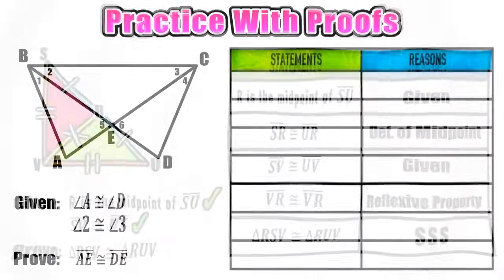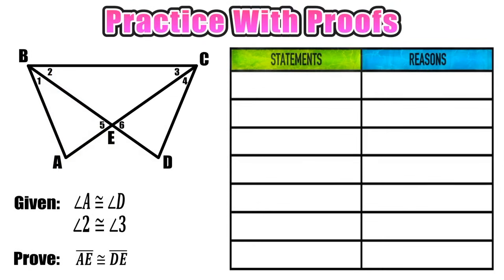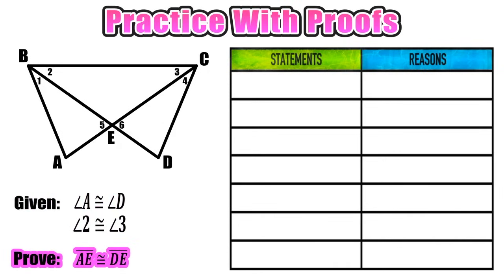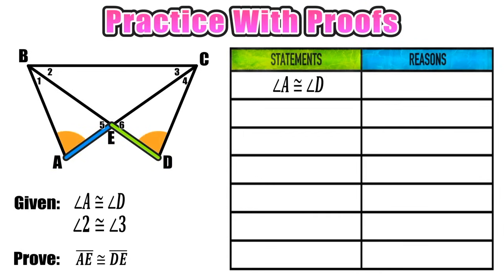This third proof is more challenging. Same structure — diagram, given information — but unlike the last two examples, here we have to prove that two line segments are congruent, not just two triangles, so there will be an extra step. We want to prove that segment AE is congruent to segment DE. We'll label AE in blue and DE in green.